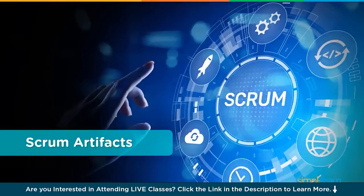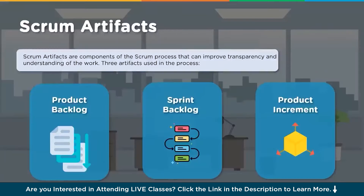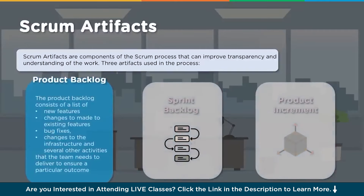There are certain artifacts in scrum that improve transparency and understanding of the work. The three main artifacts are the product backlog, sprint backlog, and product increment. The product backlog consists of a list of new features, changes to existing features, bug fixes, infrastructure changes, and other activities the team needs to deliver for a particular outcome. This list is prioritized in the order it needs to be delivered, and as the project progresses, new backlog items are added.